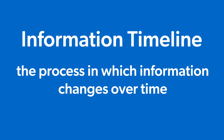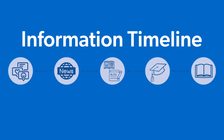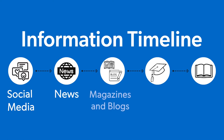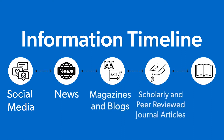Typically, an event happens and then the information timeline begins. The steps in the timeline include social media, news, magazines and blogs, scholarly and peer-reviewed journal articles, and books.